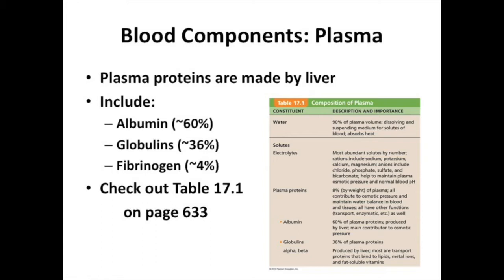All plasma proteins are going to be made by the liver. The three big ones are albumin, globulins, and fibrinogen. There's a great table in your book — that page number is a little off because it's from the old edition, but I think it's somewhere around page 637.